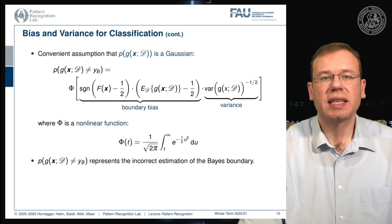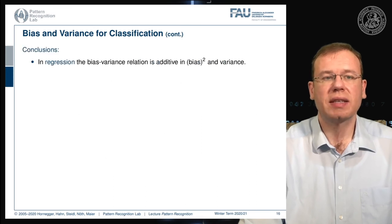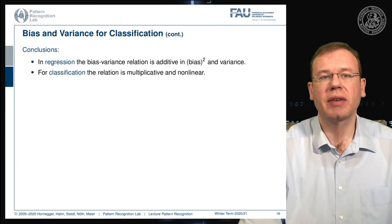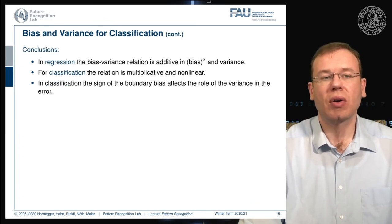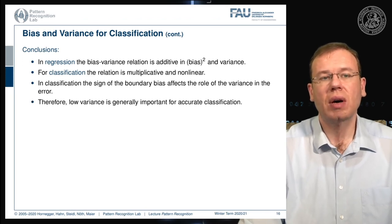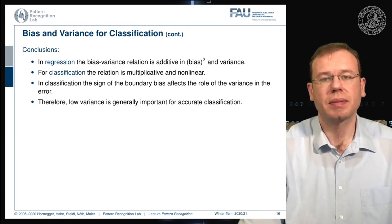The bias-variance trade-off for classification is more complicated than for regression. In regression we have an additive relation between bias and variance. For classification we have multiplicative behavior and non-linearity, and the sign of the boundary bias affects the role of variance in the error. Therefore, low variance is generally important for accurate classification, and we can conclude that variance generally dominates bias in classification.